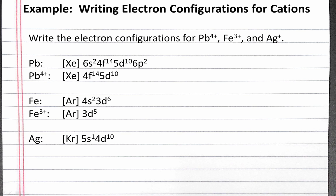Now that we have the correct electron configuration for silver, we can create our electron configuration for silver-plus. We need to remove one electron, and it gets removed from the highest principal quantum number, which is the 5s subshell. What remains is krypton 4d10.